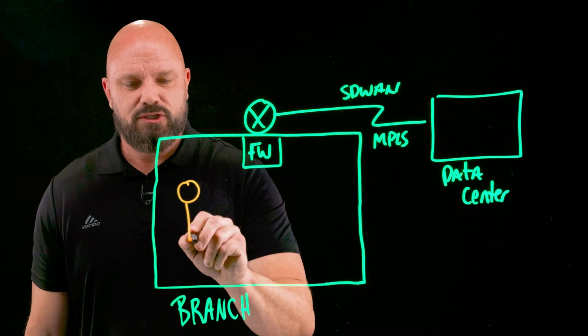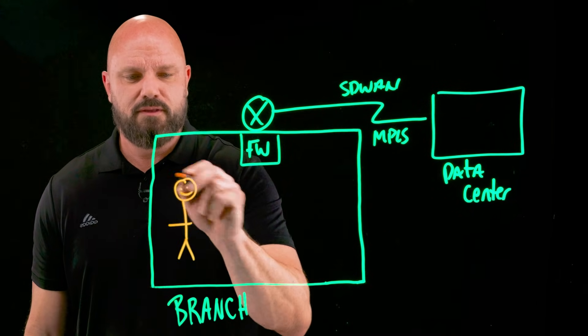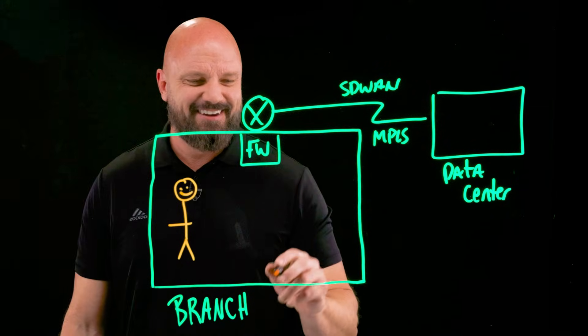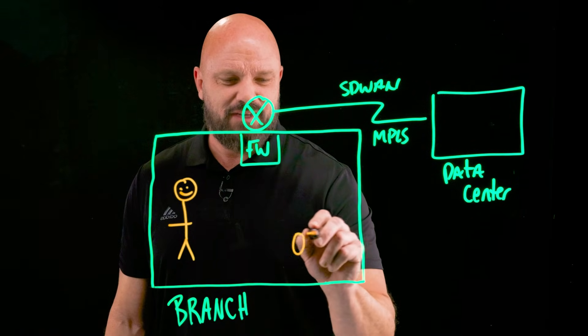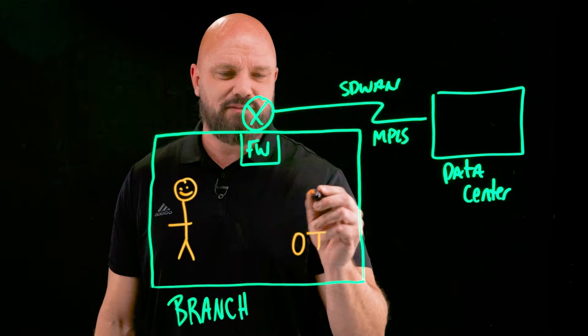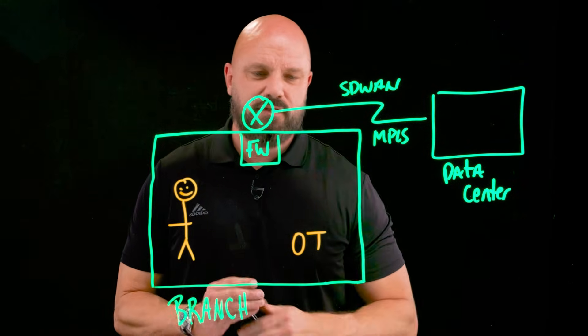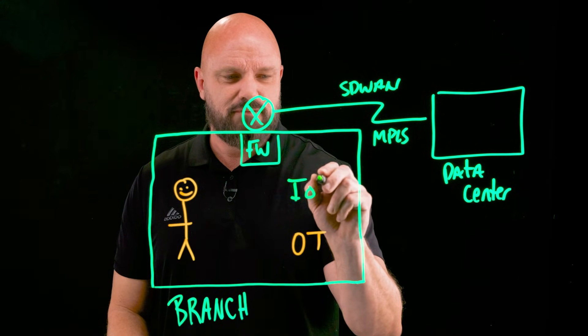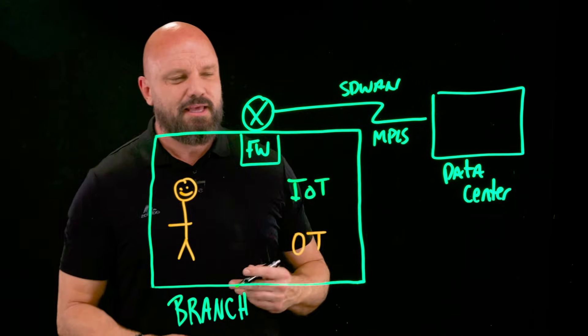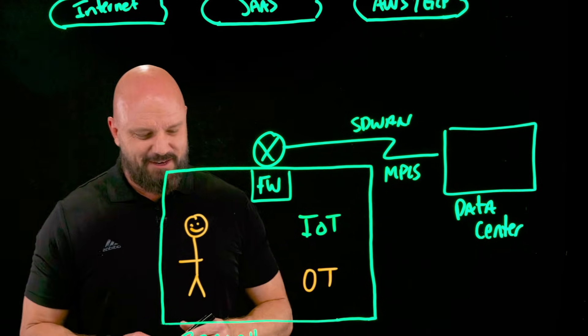So when we start to think about that, you have employees at the branch, and they're going to be happy because eventually they'll be on Zscaler. Then you have an OT network as well, devices. Then, of course, you have IoT, or as I like to call it, the Internet of Dookie. If you don't believe me, we can talk about that another time.